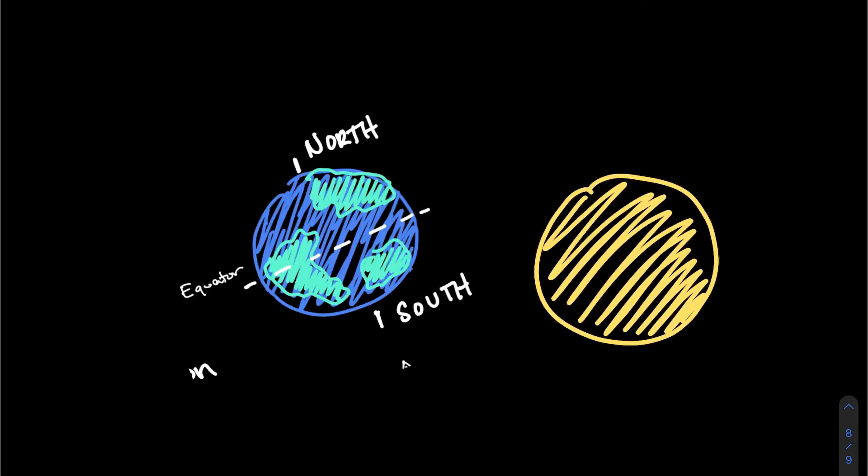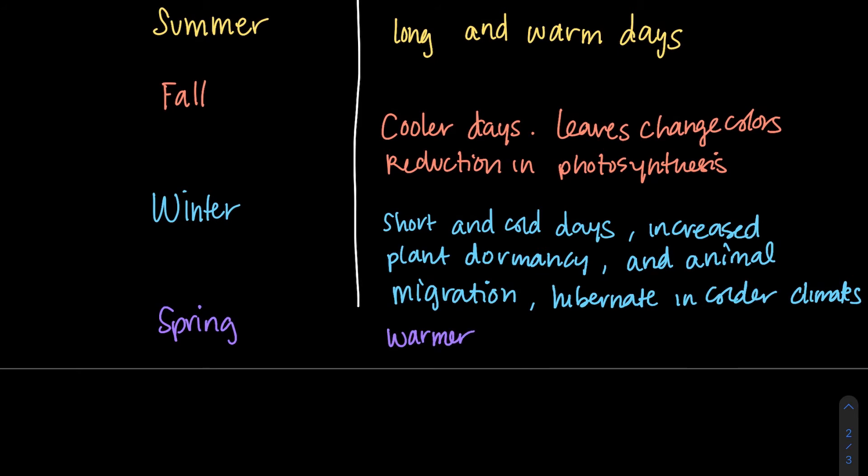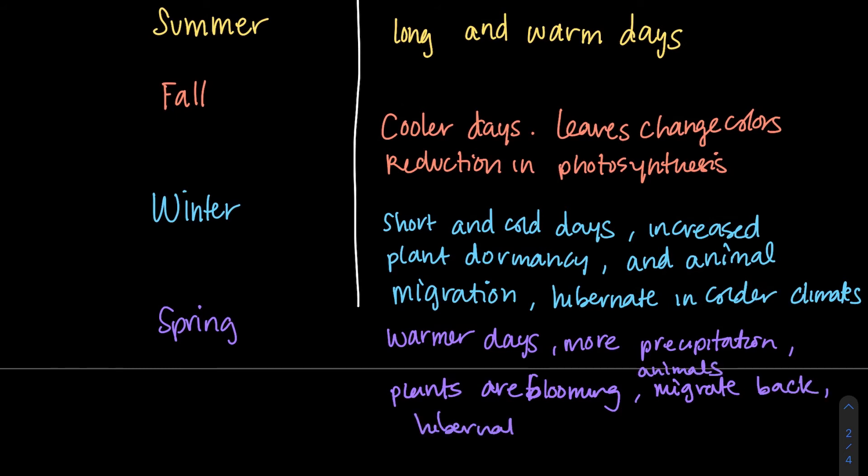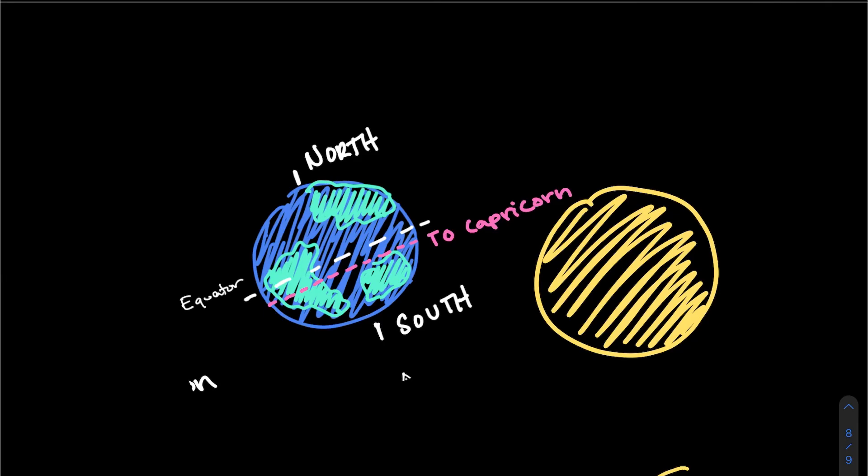In the winter, our Tropic of Capricorn is now tilted towards the sun. And in the northern hemisphere, you're experiencing short and cold days. There's an increase in plant dormancy, and animal migration and hibernation happens in colder climates. Then in the spring, warmer days occur, there's more precipitation, plants bloom, and because they're less dormant, animals tend to migrate back and hibernation ends.